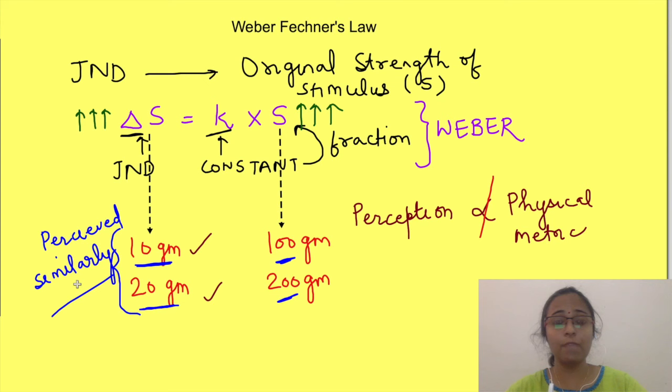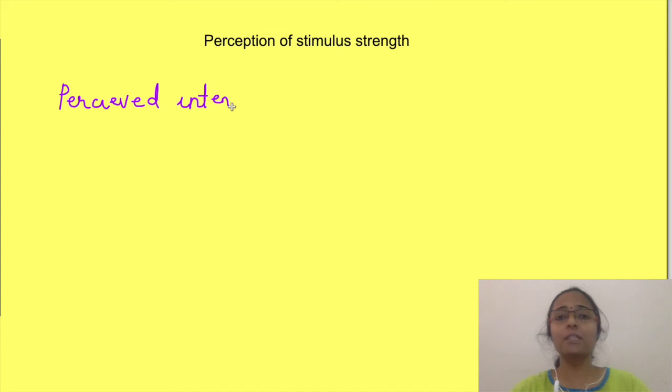So this idea of Weber was extended by Fechner, who explained how you perceive the stimulus strength by an equation where perceived intensity equals k log stimulus strength, where k is a constant and k varies for different sensations.